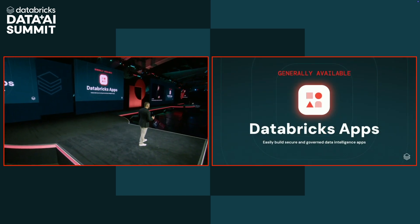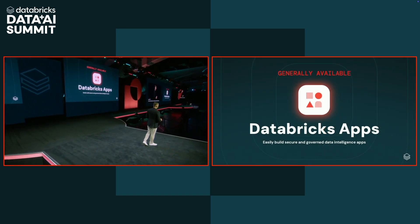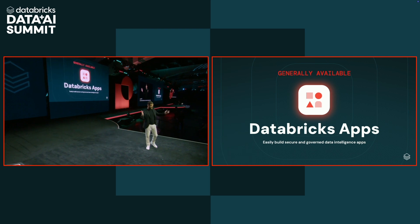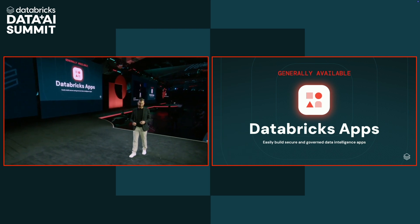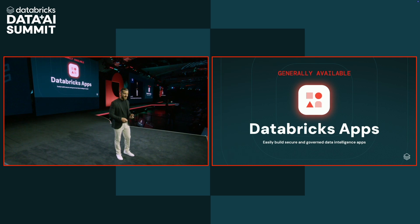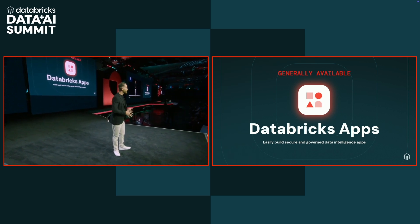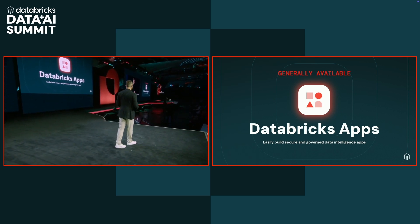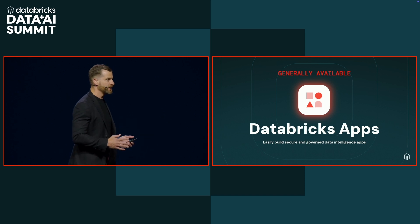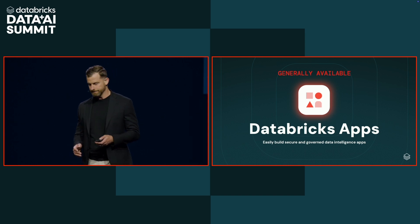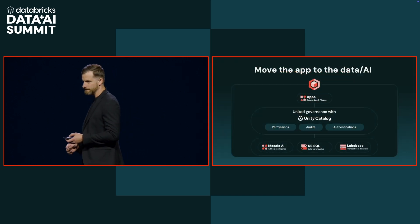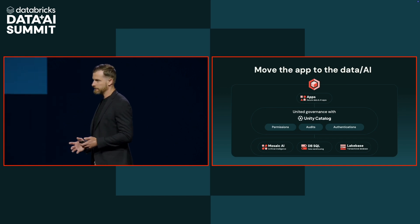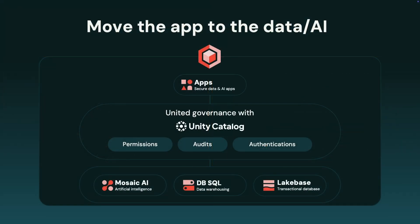That's why we are super excited to announce the general availability of Databricks apps. Databricks apps makes it easy to build secure and governed data intelligence applications deployed directly in Databricks and governed through Unity Catalog. This is about a broader architectural shift of moving the app to the data and AI versus moving the data and AI to the app. This is critically important, and we think this is the architecture of the future.